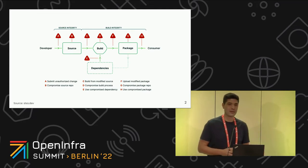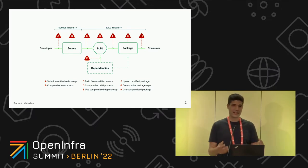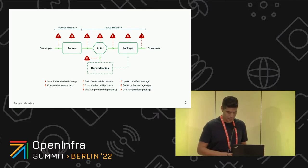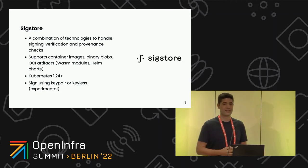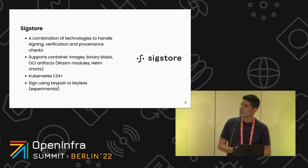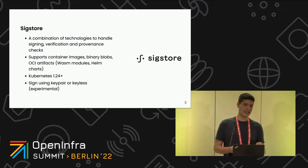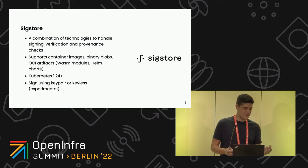To achieve build integrity, we're going to sign our images in our build pipelines, and then verify these container images inside of our Kubernetes cluster. Let's start talking about signing. For signing, let me introduce Sigstore, which is a combination of technologies to handle signing and verification. These technologies include Cosign, which is the tool we use for signing.